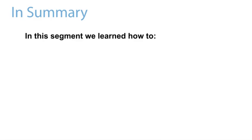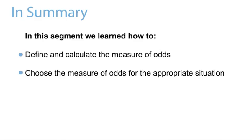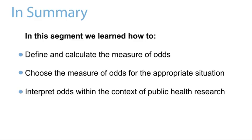This concludes the segment on the measure of health outcome occurrence or disease occurrence, known as odds. So to summarize what we covered in this segment, we learned how to define and calculate the measure of odds, choose the measure of odds for the appropriate situation, and interpret the odds within the context of public health research.